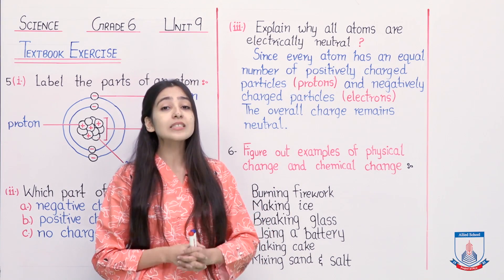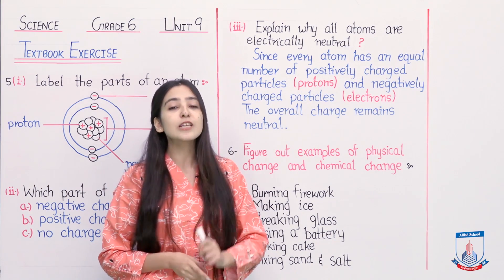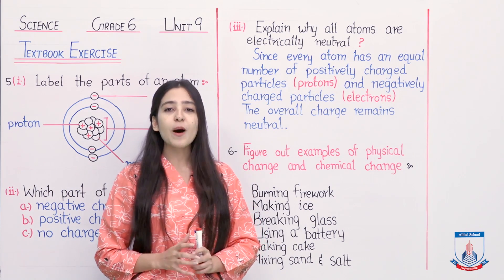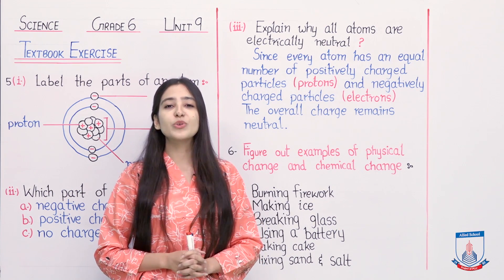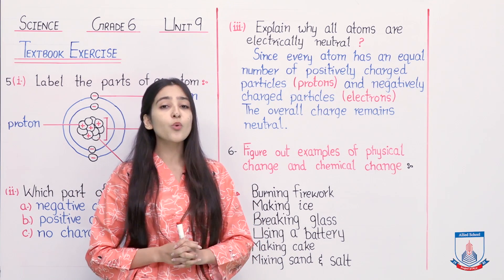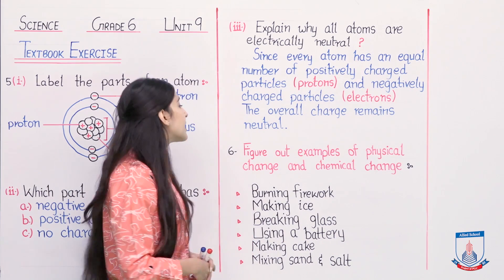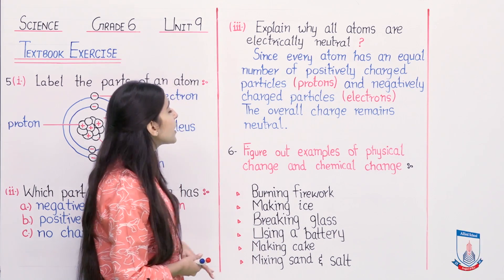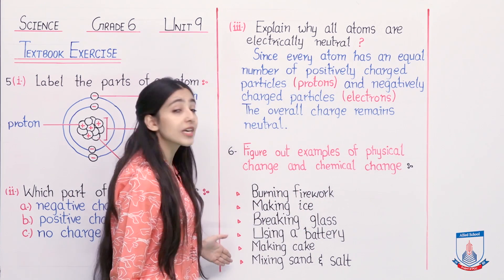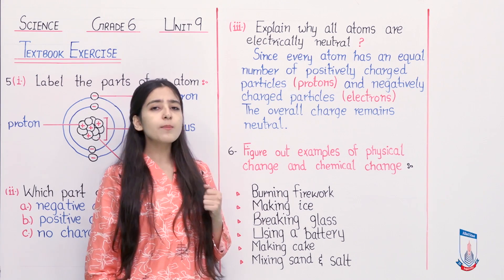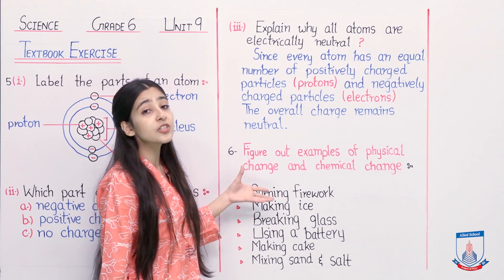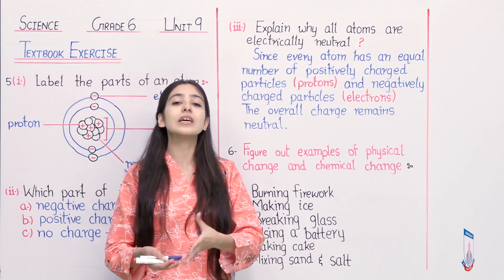I hope you are noting down the answers. If you haven't done so, pause the video now, go and note the answers, then quickly come back. Well done students. With this, we have ended question number five and we are moving towards the last question of our textbook exercise, that is question number six. It says: figure out examples of physical change and chemical change. We have some examples in front of us and we have to identify which are chemical changes and which are physical changes.